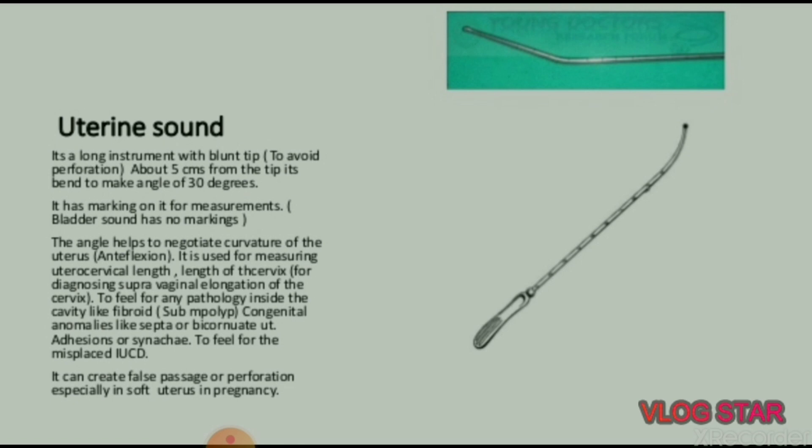Metal catheter: used for intermittent drainage as in vaginal hysterectomy. Uterine sound: a long instrument with a blunt tip to avoid perforation. About five centimeters from the tip it is bent to make an angle of 30 degrees. It has markings for measurements. The angle helps to negotiate the curvature of the uterus in anteflexion.